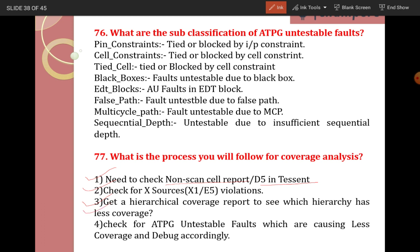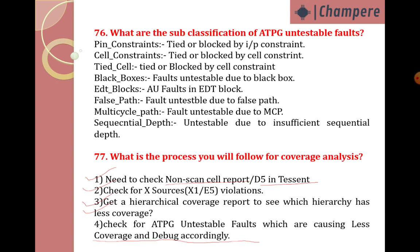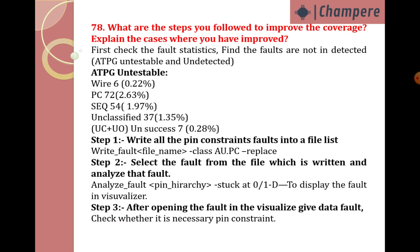From the coverage report, check for ATPG untestable faults which are causing less coverage and debug accordingly. To debug, write the faults, open the fault in the visualizer, see what is causing the issue, and rectify it to improve the coverage. Next question: what are the tips you follow to improve coverage?